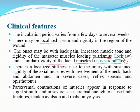There is localized stiffness near the injury with substantial rigidity of the axial muscles, with involvement of the neck, back, and abdomen, and in severe cases reflex spasm and opisthotonus. Paroxysmal contractions may cause fractures, avulsion of tendons, and muscle damage. Damage to the muscle causes rhabdomyolysis, which in turn causes renal failure. These are all complications of this paroxysmal muscle contraction due to excessive motor neuron firing from lack of inhibition.